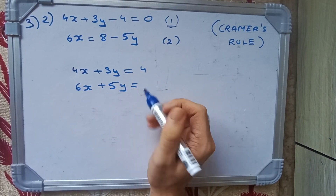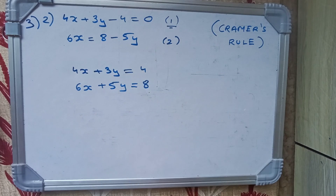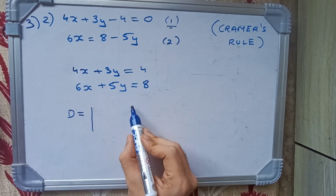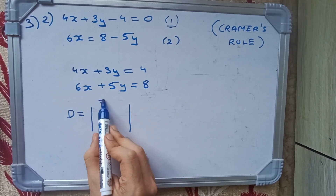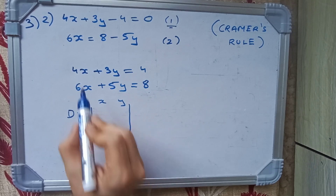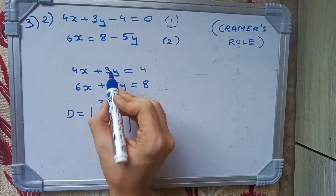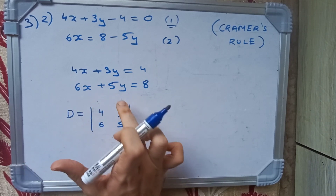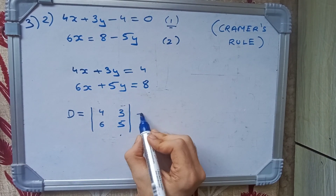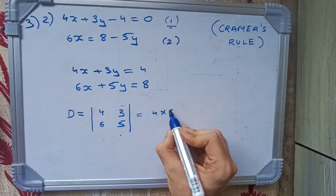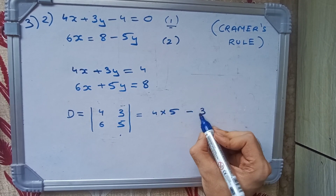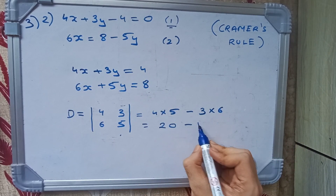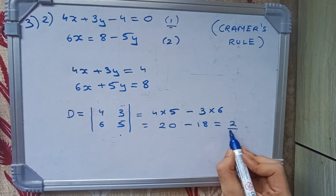Now using Cramer's Rule, we compute the determinant D. We write the x-coefficients as 4 and 6, and y-coefficients as 3 and 5. Cross multiplying: 4 × 5 minus 3 × 6 equals 20 minus 18, so D equals 2.